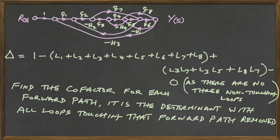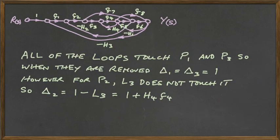So clearly, for the first path which goes straight through from RS to YS, all the loops are going to touch that. Since all the loops touch that, when we remove them, what's left is just the one. So the delta, the co-factor delta is only going to be one for loop one and for loop, sorry, for path one and for path three. You can see that all of the loops touch path one and path three. So when they're all removed, delta one and delta three will be simply one.